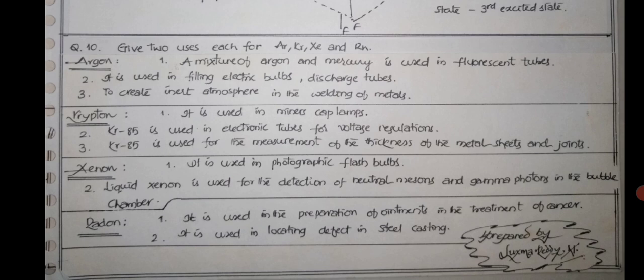Krypton is used in miners' cap lamps. Miners are those who work in coal mines, and their caps contain lamps where krypton is used. Krypton-85 is used in electronic tubes for voltage regulation.